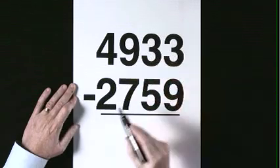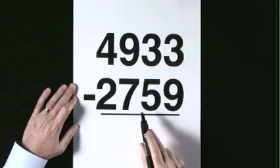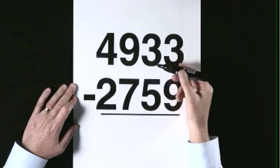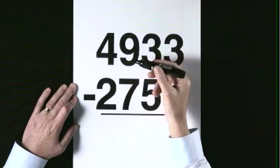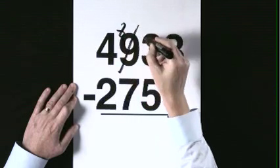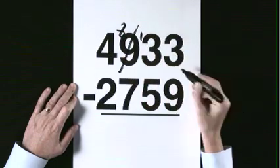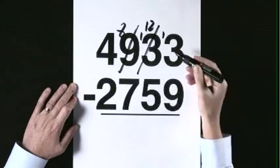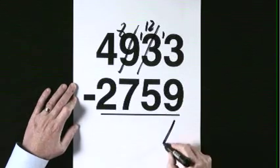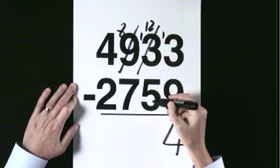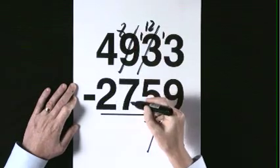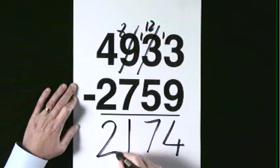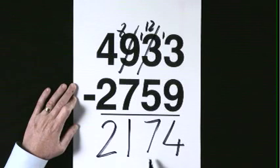4,933 subtract 2,759. We can't subtract, we need to exchange from the 9. 9 becomes 8, 13. 13 becomes 12. 13 take 9 is 4. 12 take 5 is 7. 8 take 7 is 1. 4 take 2 is 2. The answer is 2,174.